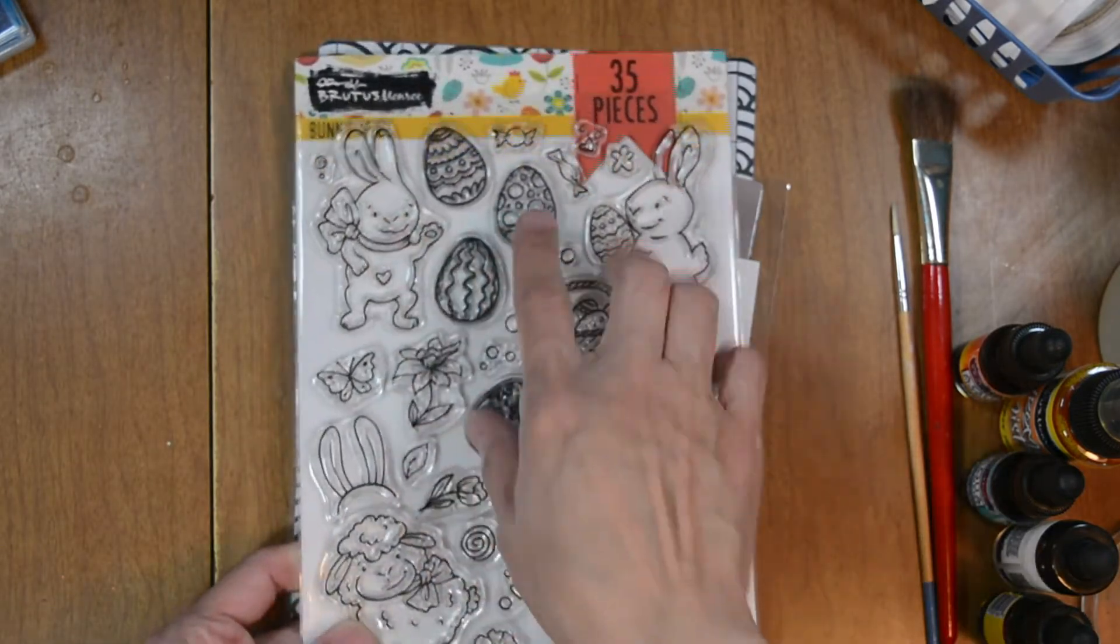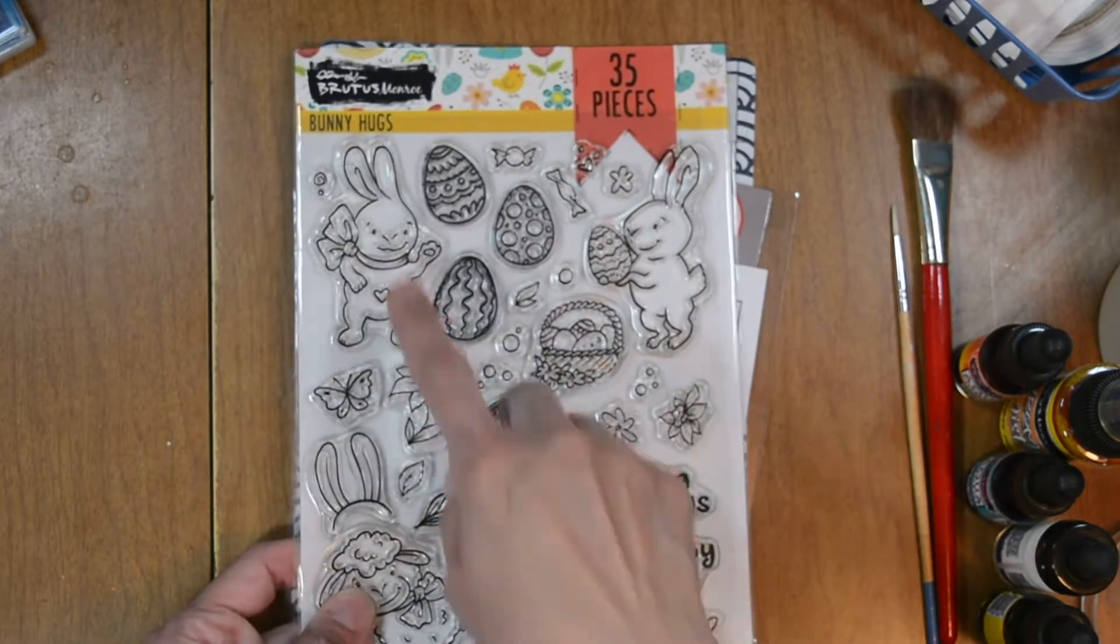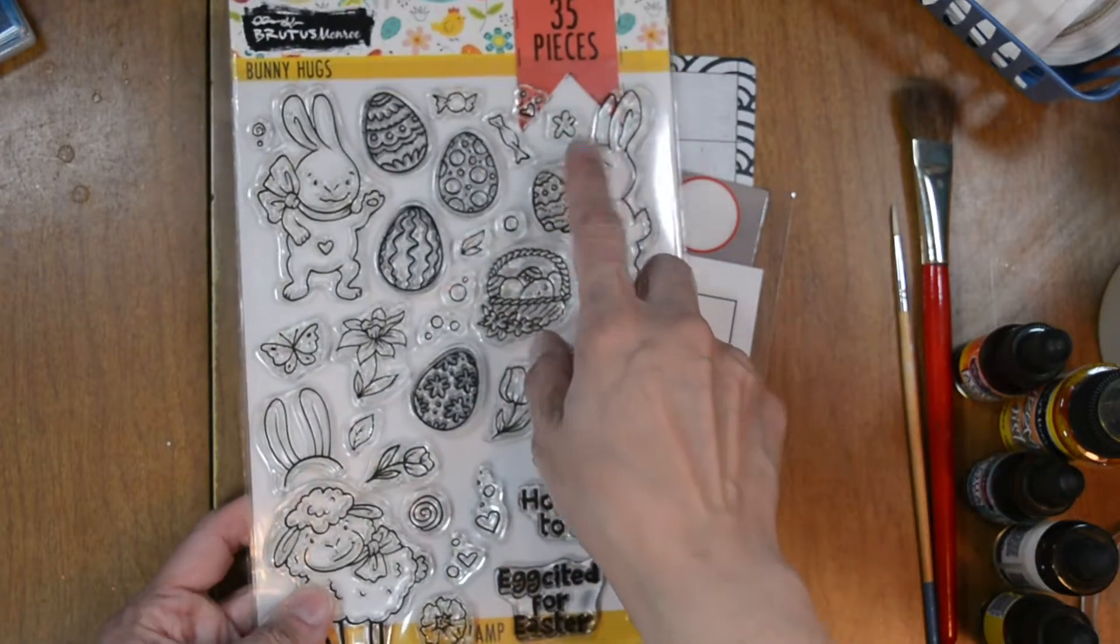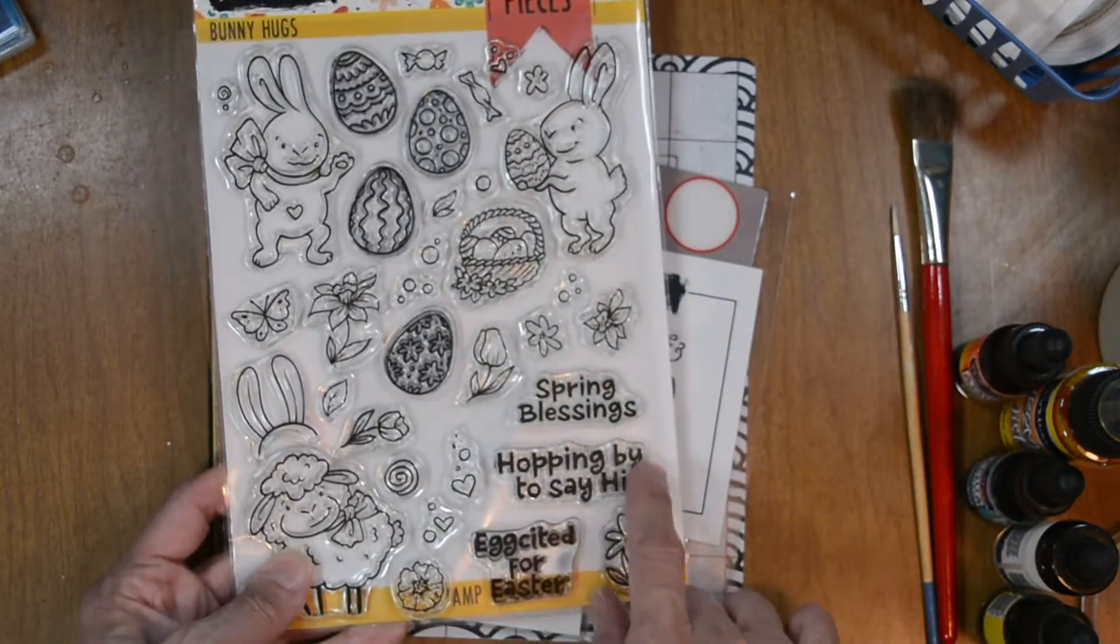Our stamp set is called Bunny Hugs. This is a 35-piece set, but we're going to use this little bunny, a field of florals, and a sentiment that reads 'hopping by to say hi.'